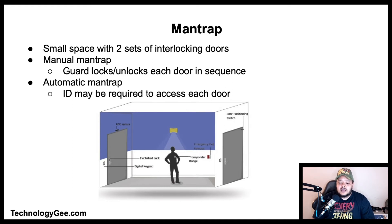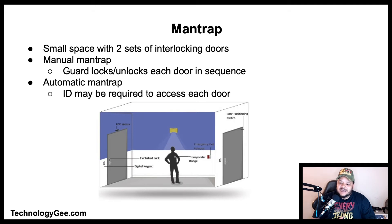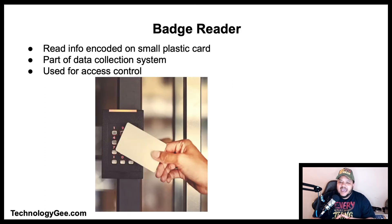In an automatic man trap, identification may be required for each door — sometimes even different measures for each door. For example, a key may open the first door, but a personal identification number entered on a number pad opens the second door. Other methods include proximity cards or biometric devices such as fingerprint readers. Overall, man traps basically slow down a person's entry process to prevent unauthorized entry into an area.